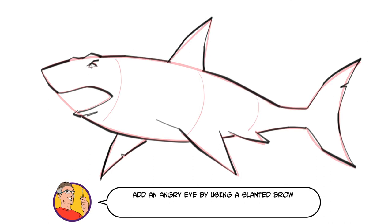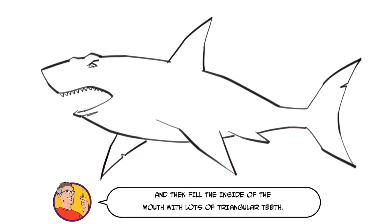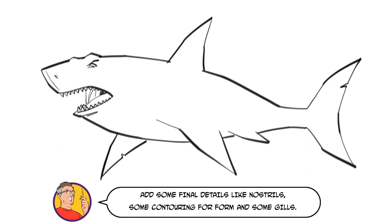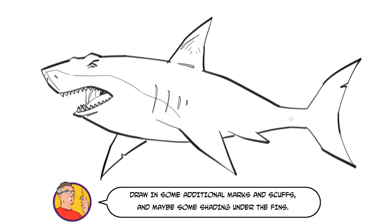Add an angry eye by using a slanted brow and then fill the inside of the mouth with lots of triangular teeth. Add some final details like nostrils, some contouring for form, and some gills. Draw in some additional marks and scuffs and maybe some shading under the fins.